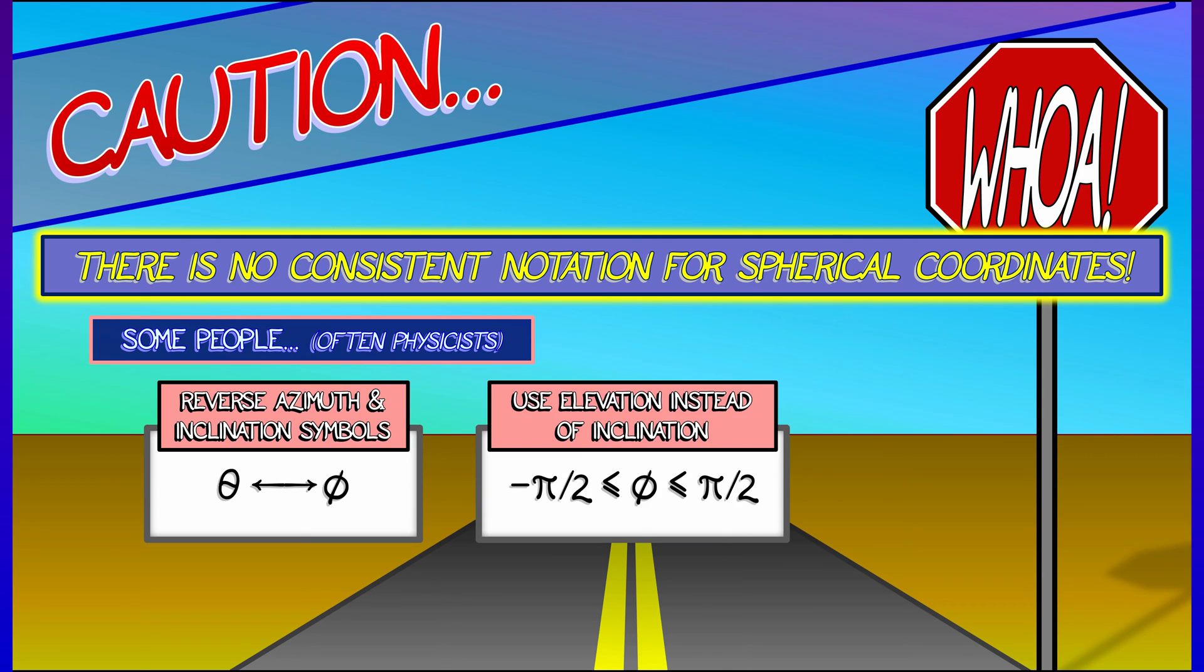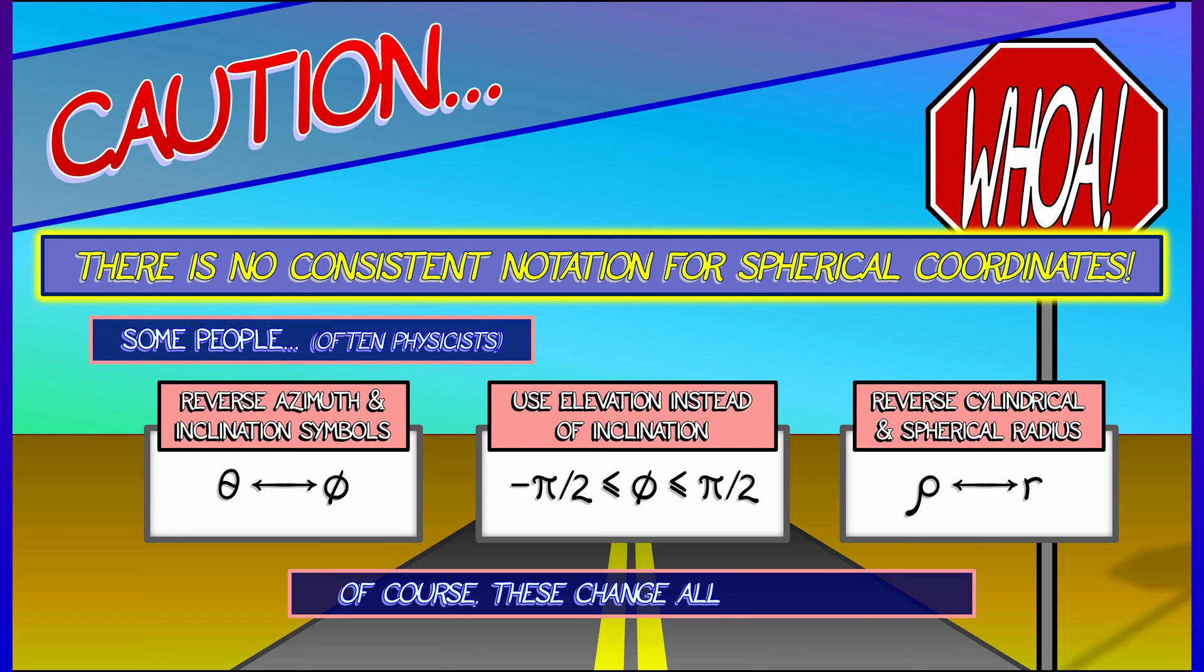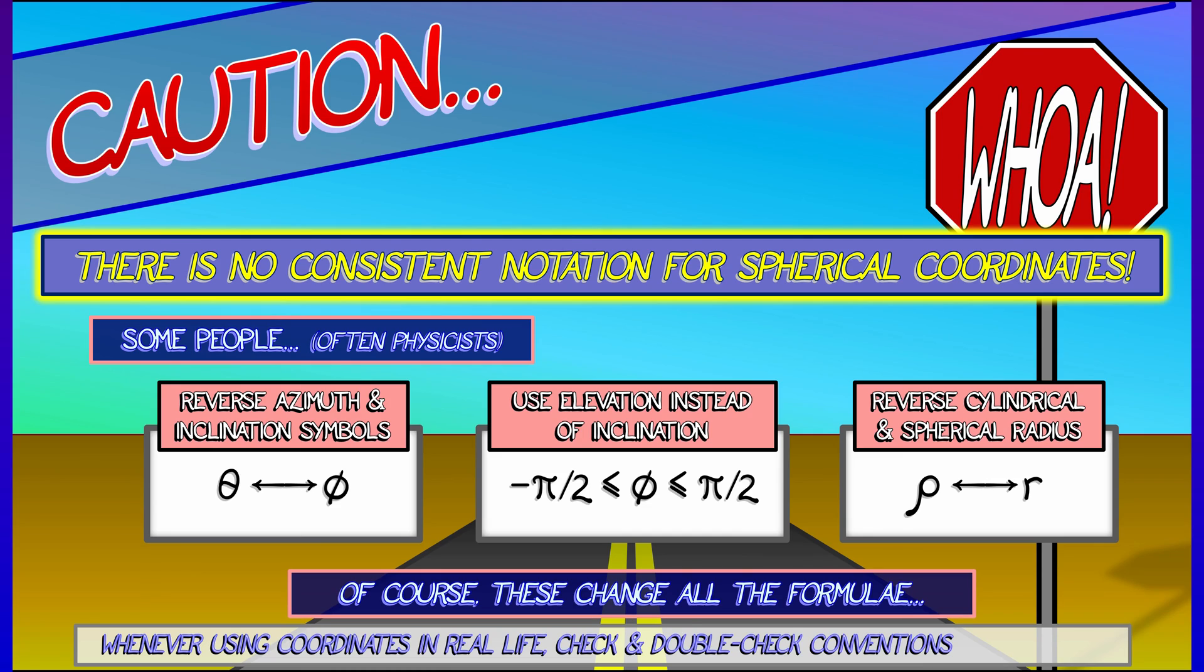They'll say, oh no, when inclination is zero, that's the equator. So phi goes from negative pi over two to pi over two. And the worst is when they exchange these symbols, r and rho, mixing up the radial variables between polar and cylindrical coordinates. Oh, I hate that.